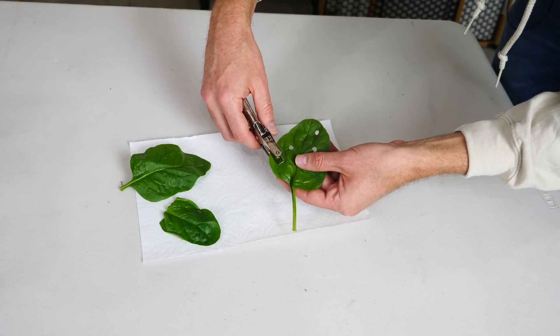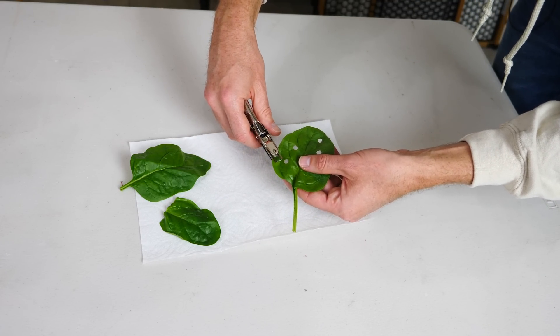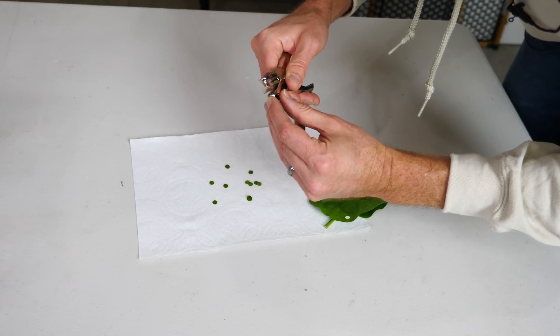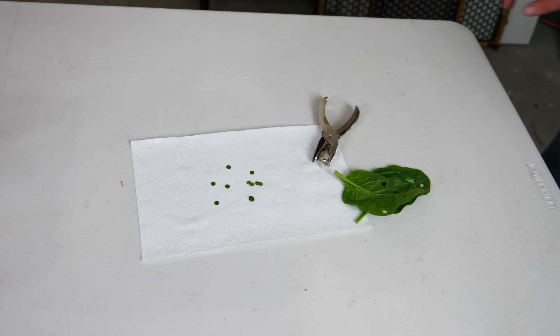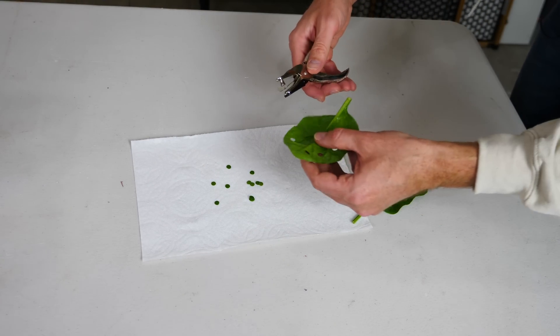So I'm trying to get spots of the leaf that don't have veins in them. There's my leaf discs. Let's do a few more.